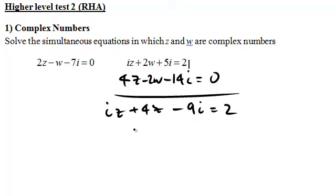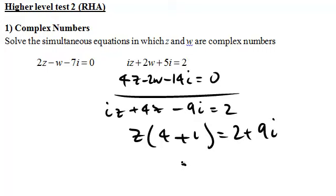And so I can write that as z times 4 plus i. Z times 4 plus i equals 2 plus 9i. And then just do a division. 2 plus 9i over 4 plus i.